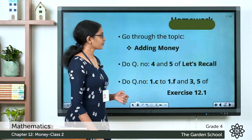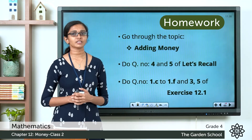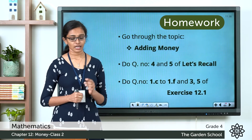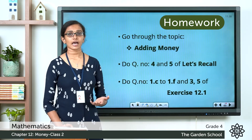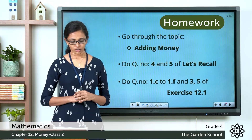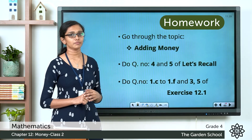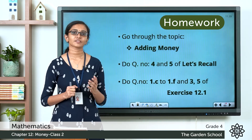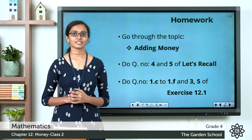Now go through the topic 'Adding Money' on page 165 of your textbook. Complete question numbers 4 and 5 from the 'Let's Recall' exercise, and work out questions 1c, 1d, 1e, 1f, and also questions 3 and 5 of Exercise 12.1. Questions 1c to 1f can be done in the textbook, but questions 3 and 5, which are word problems, should be worked out in your notebook. Once done, take a picture and send it through Teams. That's all for today — see you in the next class. Bye!